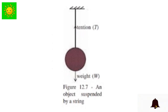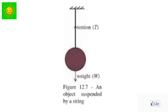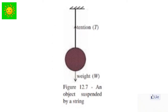If an object is suspended by a string and remains in equilibrium, it is because a force equal to the weight of the object acts vertically upward along the string. This upward force is known as the tension of the string. The object is held in equilibrium by two forces — its weight and the tension of the string — and so it remains at rest.